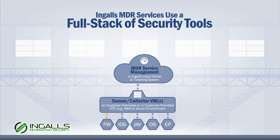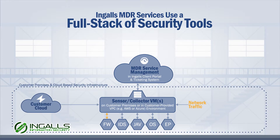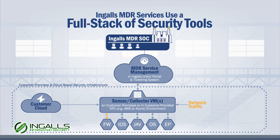It all starts with data collected from your on-premises and cloud environments, which is shipped to the Engels cloud analytics platform where your dedicated analyst team performs manual review and analysis of every event. If a security incident is found, your dedicated analyst team will reach out to you via email, SMS, or phone calls depending on the severity of the event.